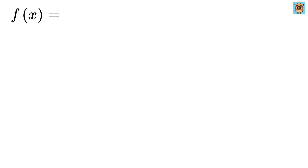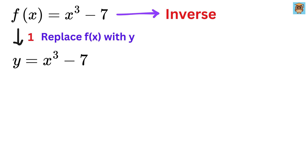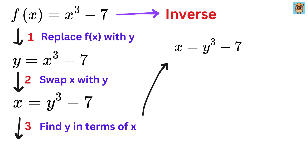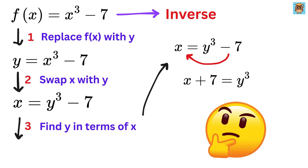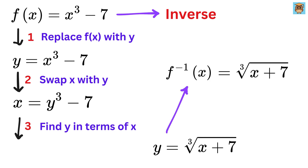The next example is f of x equals x cubed minus 7, and we have to find its inverse. Replace f of x with y, so y equals x cubed minus 7. Next, switch x and y to get x equals y cubed minus 7. Now find y in terms of x: take minus 7 to the left-hand side to make it plus 7, then take the cube root on both sides. This cancels out, giving y equals the cube root of x plus 7. That is the inverse of f of x.